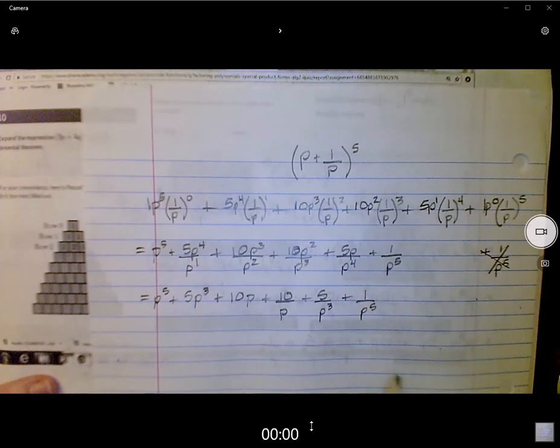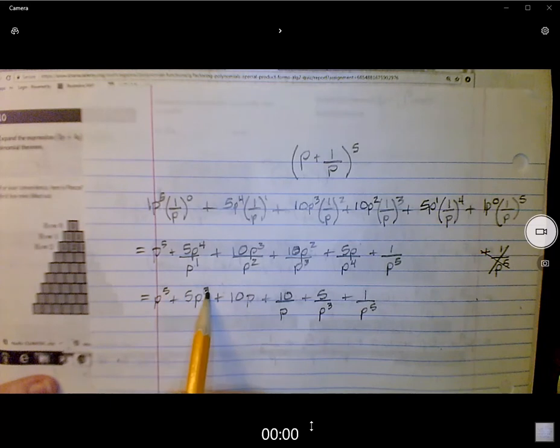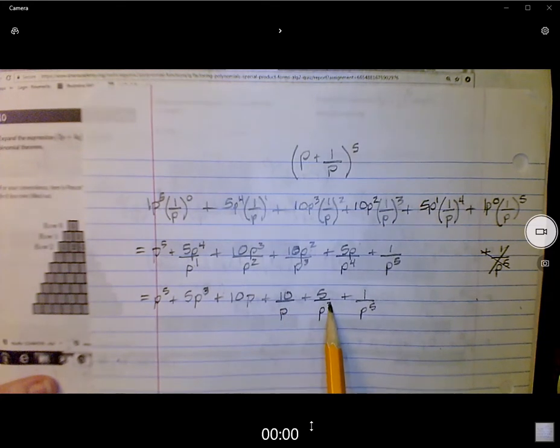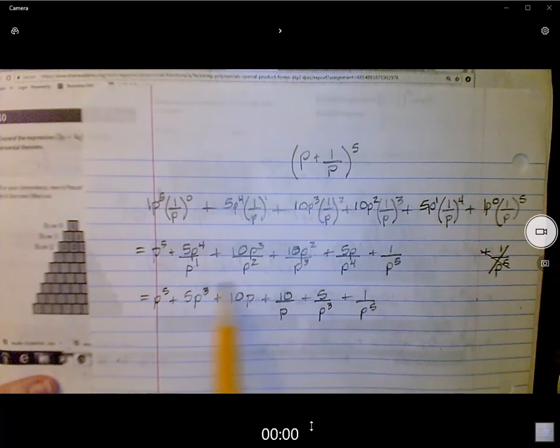So I suppose we do still have a pattern, because our exponent is changing by two places. 5, 3, 1, negative 1, negative 3, negative 5. So we have a pattern. Anyway, this is as far as we can go.